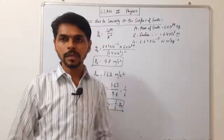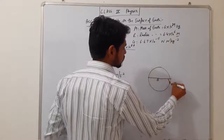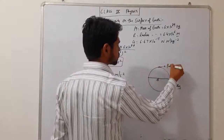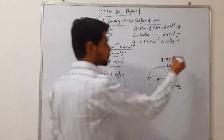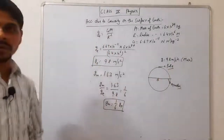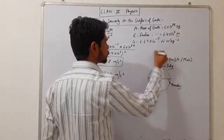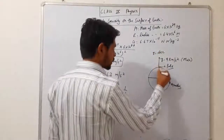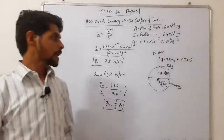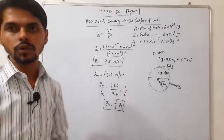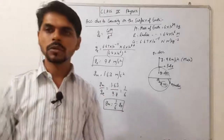अब acceleration due to gravity के बारे में कुछ important points: Earth के equator पे और pole पे अलग होती है। Pole पे acceleration due to gravity 9.8 m/s² होती है और यह maximum होती है — इससे ज्यादा कहीं भी नहीं होती। अगर आप Earth के surface से ऊपर की तरफ जाओगे तो g decrease होगा। अगर नीचे की तरफ आओगे, तो भी g decrease होगा। Earth के center पे g = 0 हो जाती है। Minimum g equator पे और maximum g pole पर surface पे होती है।